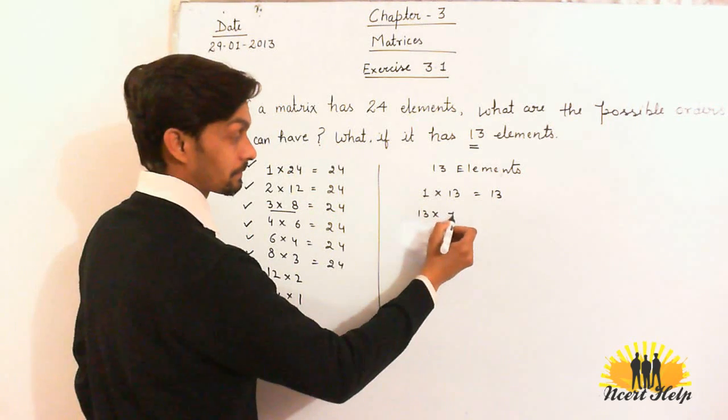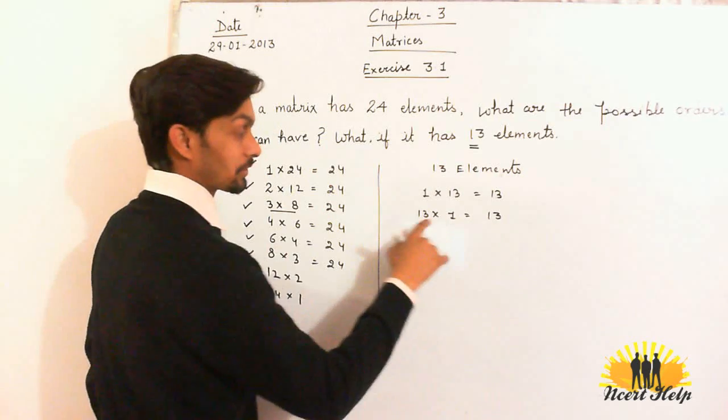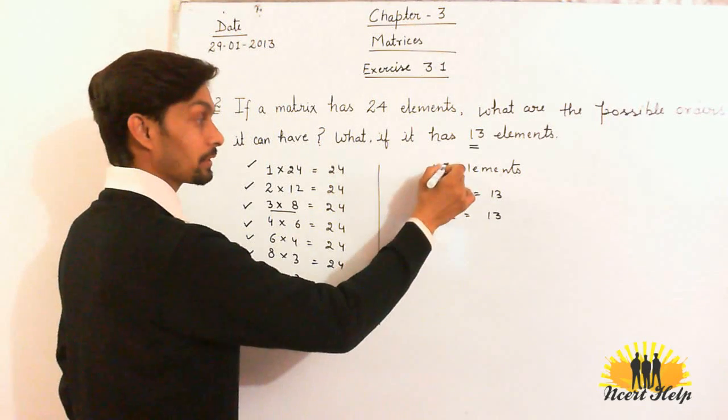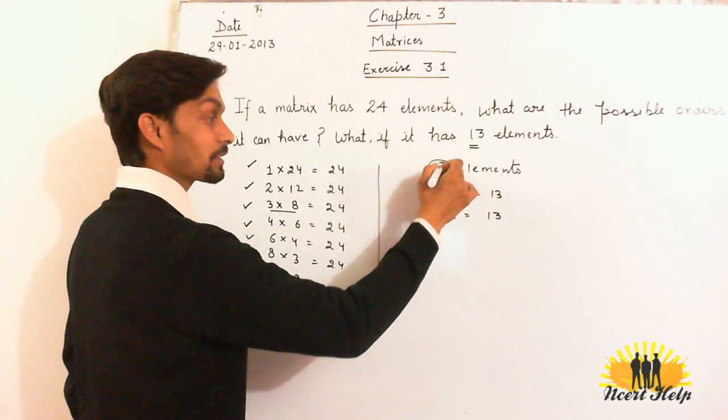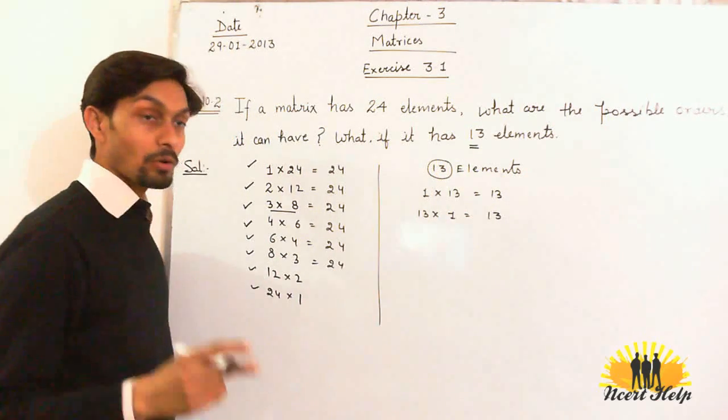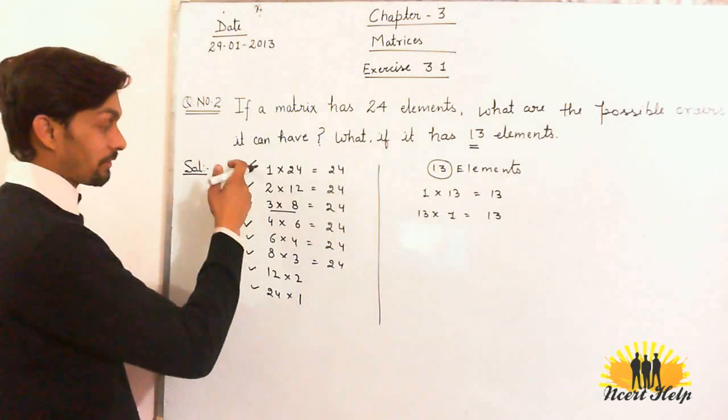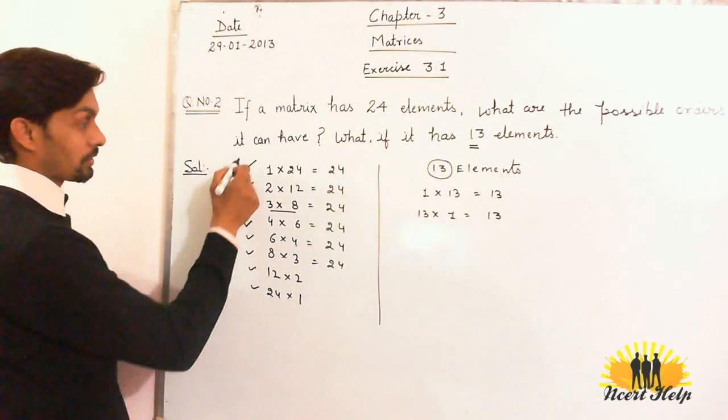13 rows and 1 column. So if the number of elements in a matrix is a prime number, then there are only 2 possible orders. And for 24, we have 8 possible orders.